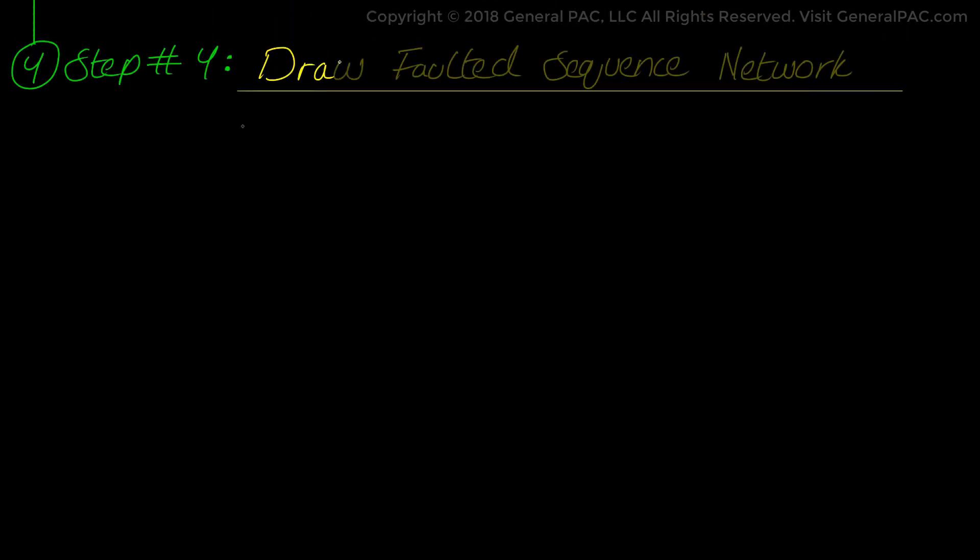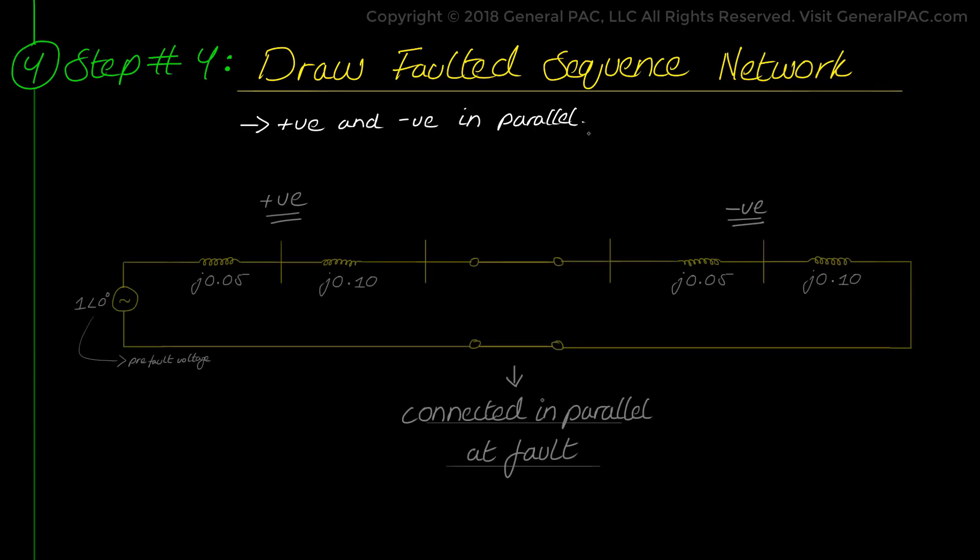And then in step number 4, we will draw the faulted sequence network based on the type of fault we have. Now, given that the fault is a line-to-line fault as we mentioned before, we will connect the positive and negative sequence networks in parallel. This we will discuss in great detail in our video on a line-to-line fault in topic 2 which is the derivation of sequence network diagrams of our series. But for now, we will just redraw a parallel connected faulted network.